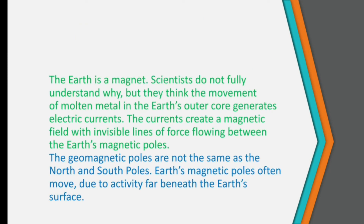Now, why does our Earth behave like a magnet? Scientists do not fully understand why, but they think the movement of molten metal in the Earth's outer core generates electric currents. These currents create a magnetic field with invisible lines of force flowing between the Earth's magnetic poles — the geomagnetic poles. Magnetic poles are not the same as the geographic north and south poles. The Earth's magnetic poles often move due to activity far beneath the Earth's surface.